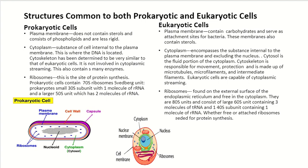Structures common to both prokaryotic and eukaryotic cells include plasma membranes, cytoplasm, and ribosomes, though their functions may be slightly different or more complex in different situations.